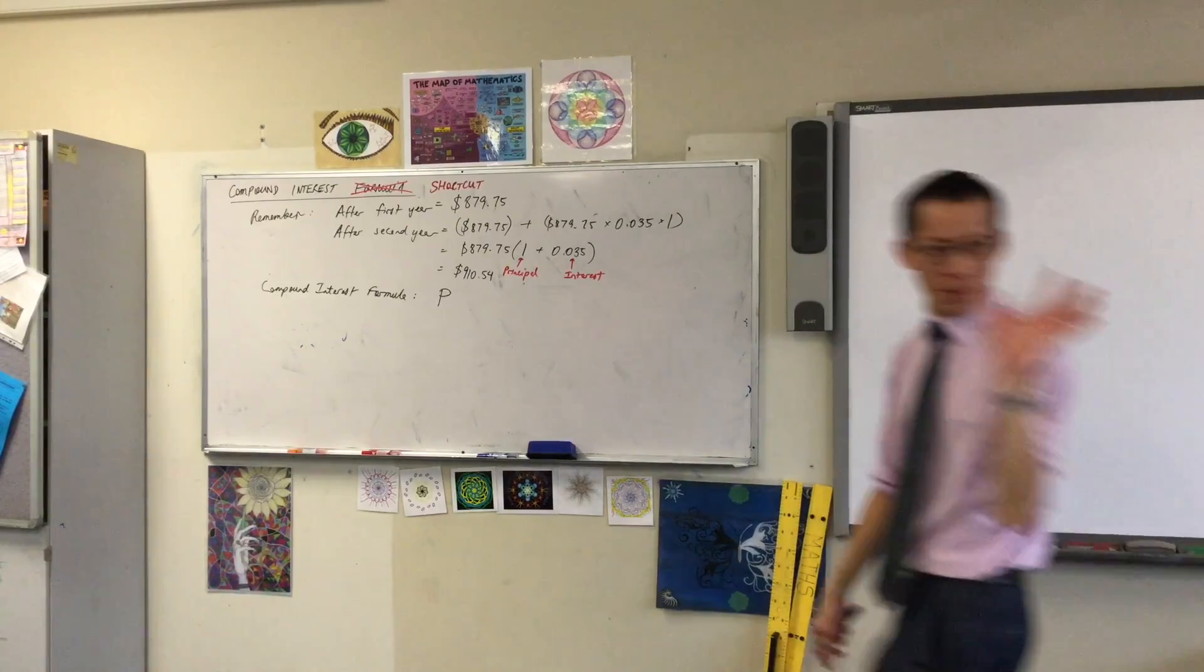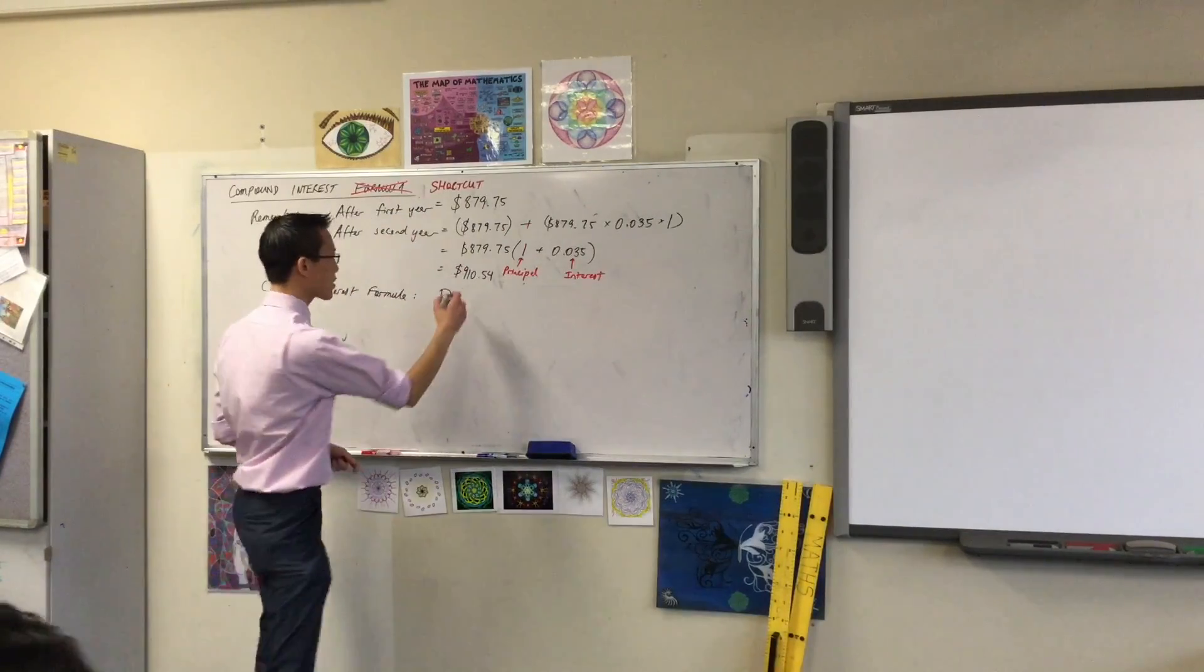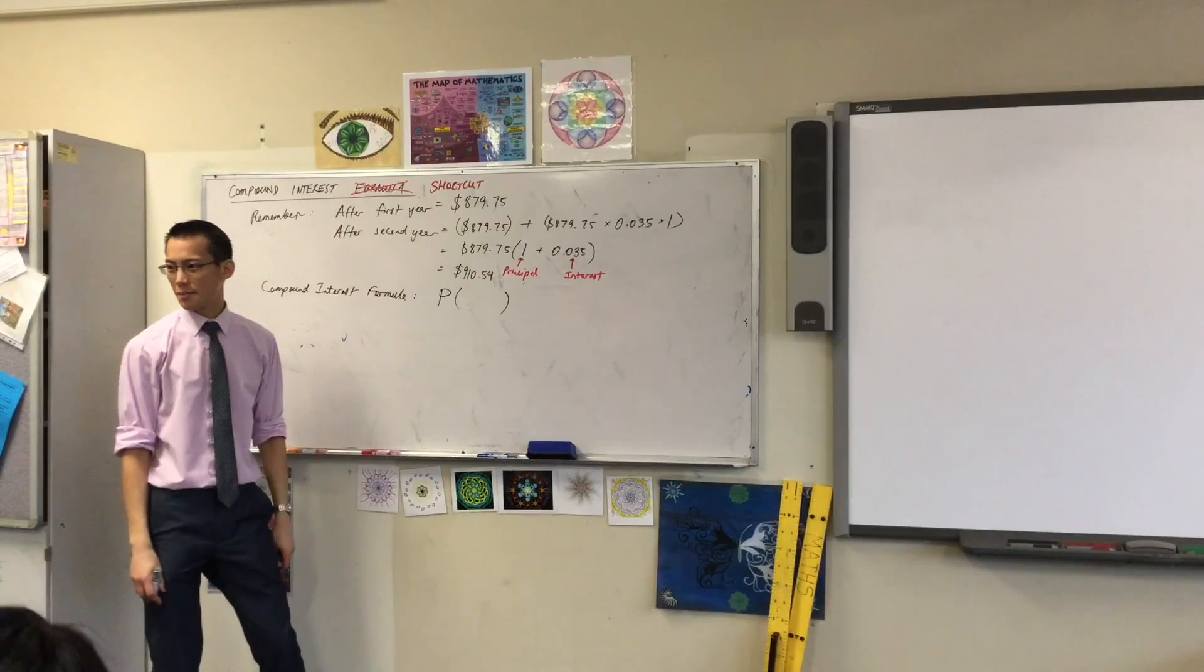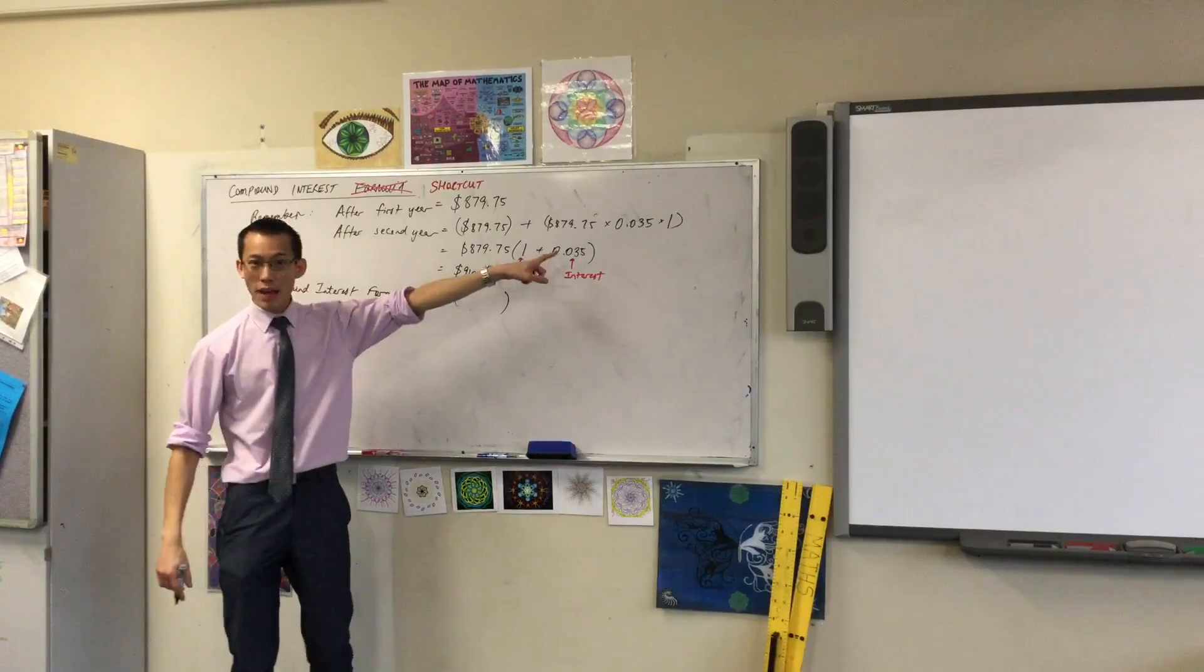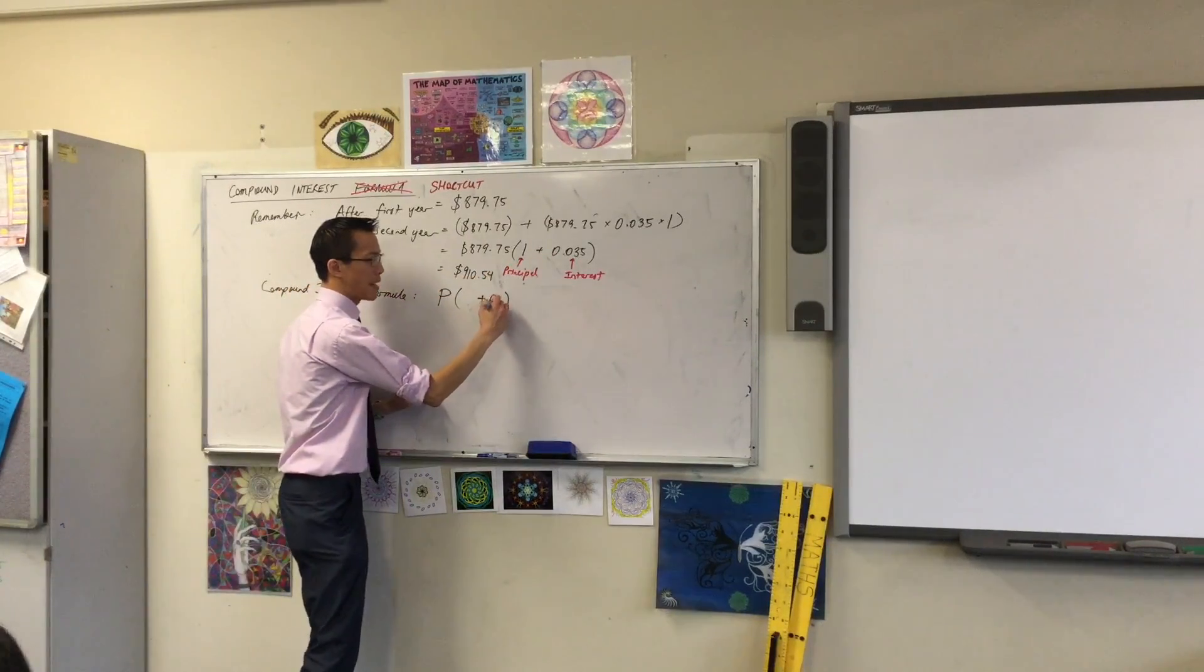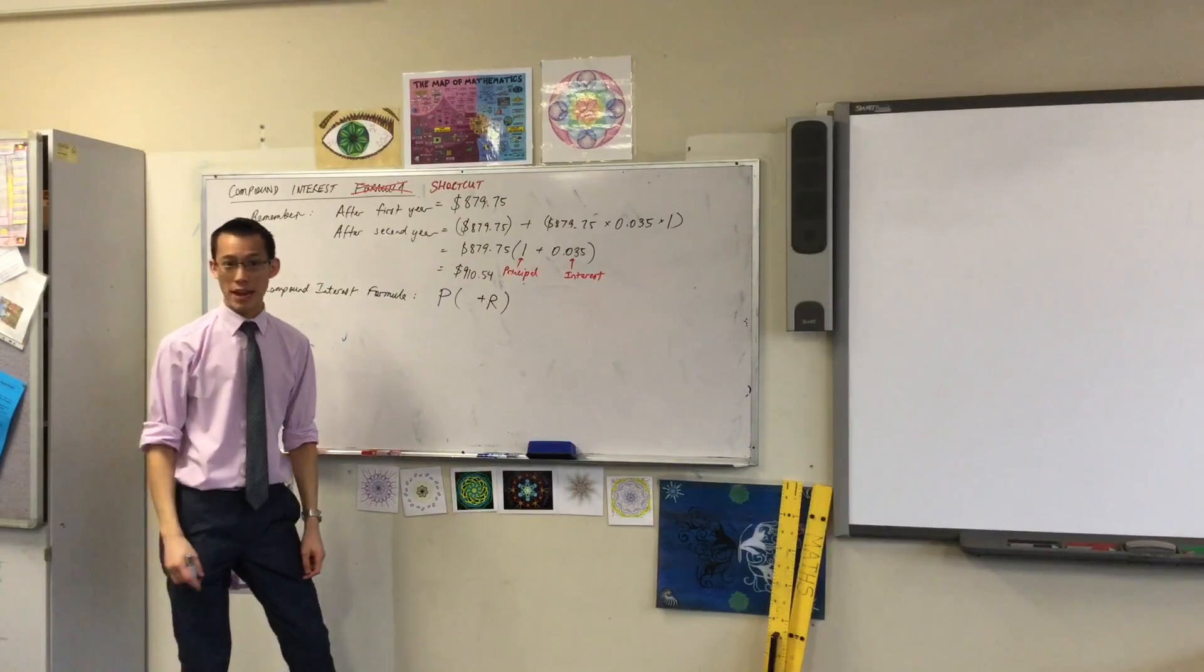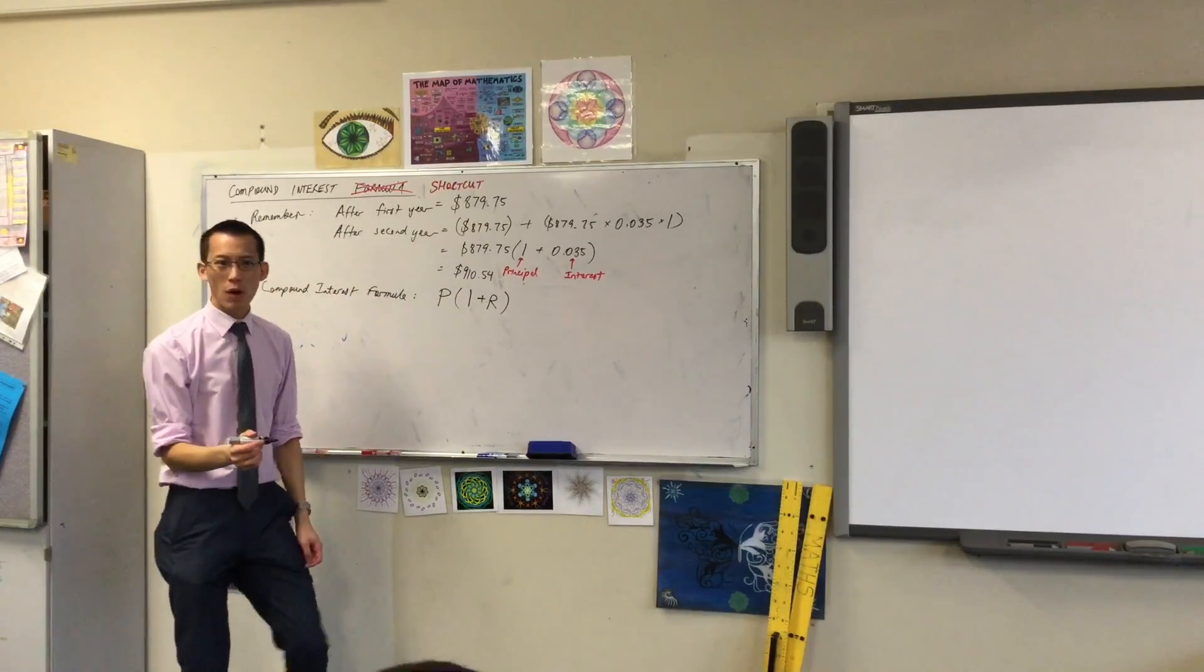Then, I factorized, right? So, P is on the outside of the brackets. What's on the inside? What's on the inside? Well, I am going to write the interest rate, but in addition to the interest rate, I've got the 1. What does that 1 represent? Why do I add 1?